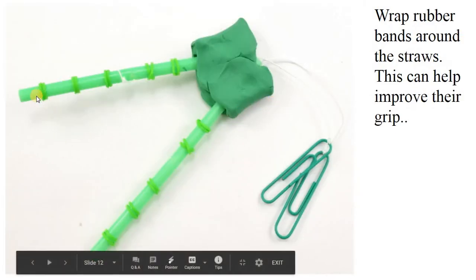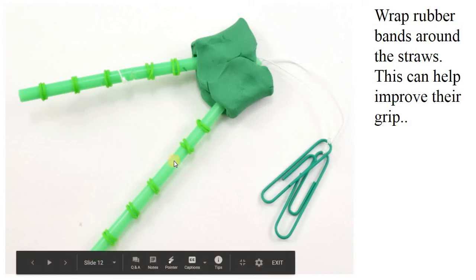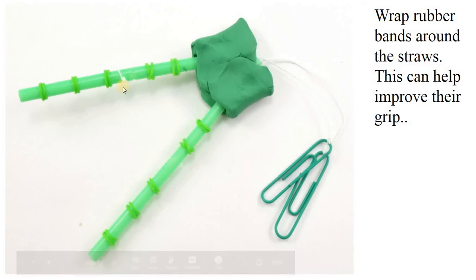Next thing you want to do is get some of those small rubber bands and put them throughout the straw. This is going to allow the rubber bands to improve the grip. Modify it as you see fit once you complete the initial design. It's just allowing it to have more surface area to grip.